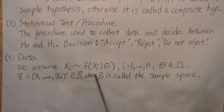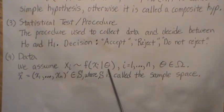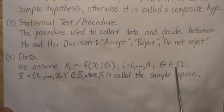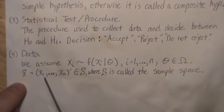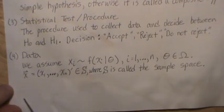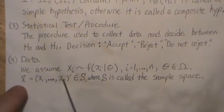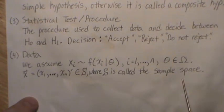Now the data we assume follows some distribution and has an unknown parameter, and really this is the goal we're trying to guess about that unknown parameter. The sample that we collect x1, x2, xn can be thought of as a vector, and it lives in the sample space S, which is called the sample space.